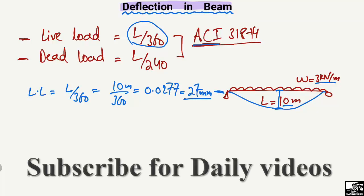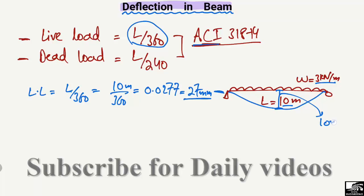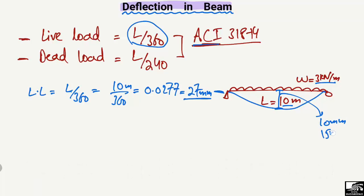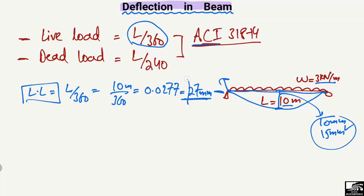So 27 millimeters is the maximum deflection allowed for this beam under live load. If the actual beam deflection is, for example, 10 or 15 millimeters, that is acceptable. But if it is greater than 27 millimeters, we should increase the cross-section of the beam to carry more load and show less deflection.